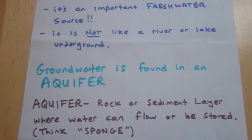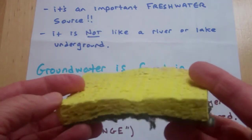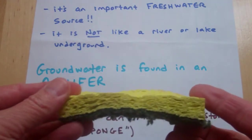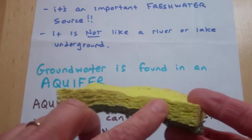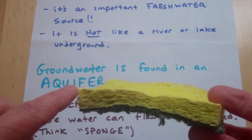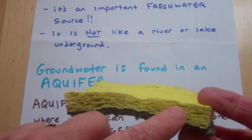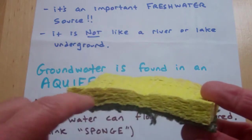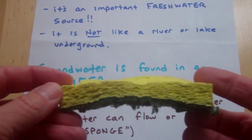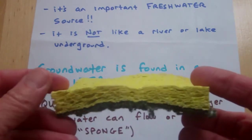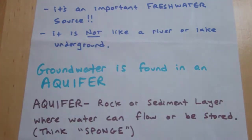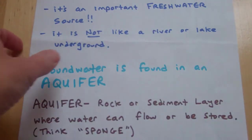Think of a sponge. An aquifer is a rock or sediment layer where water can flow or be stored. Within the rock layer are pores — spaces where water can flow and be stored — and we can drill into it to get water out. That's called well water.